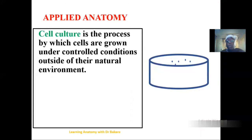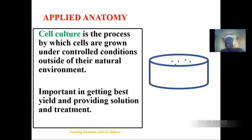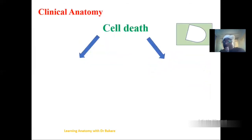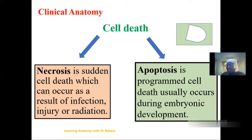In applied anatomy, we have cell culture — a process by which a cell is nurtured outside its normal environment. The natural environment of a cell is within the human body, and when it is taken out and cultured in a lab, it is called cell culture. The aim is to get the best yield of cells to improve life and provide solutions and treatment for problems at hand. When cells die, they die through two patterns: necrosis, which is sudden cell death occurring as a result of infection, toxins, injury, or radiation; or apoptosis, which is programmed cell death.